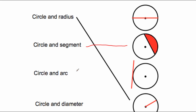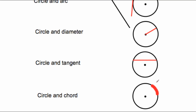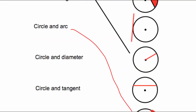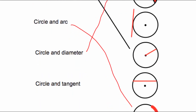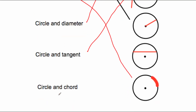Next we have a circle and an arc — an arc is part of the circumference, and we can see our arc in red. Then a circle and the diameter — a line going from one side of the circle to the other passing through the center. The one at the top is the diameter. Next, a circle and a tangent — a straight line that touches a circle and carries on. And finally, a circle and a chord — a line that goes from one side of a circle to another.